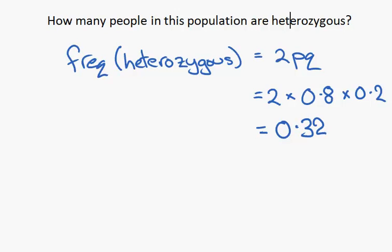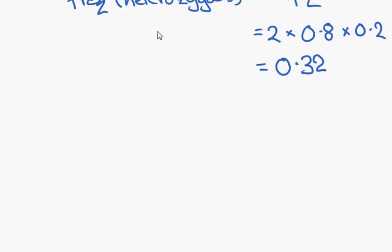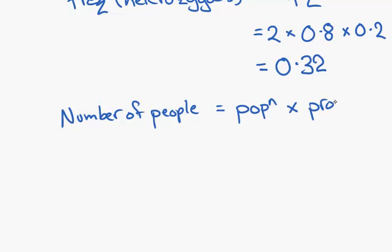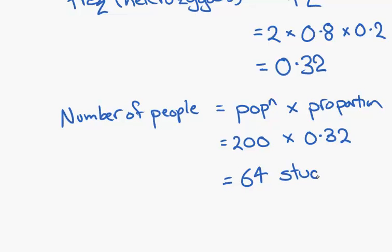Have we answered our question here? No, we haven't answered the question yet. The question says how many people. We've only worked out a frequency. So our last job is to apply this frequency to a total population of 200. So to answer the question, the number of people equals the population times the proportion equals 200 students times 0.32 equals 64 students or 64 people.